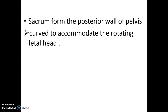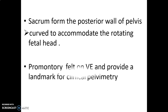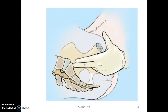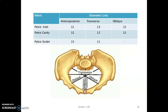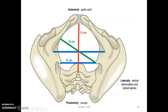The sacrum forms the posterior part of the pelvis and is curved to accommodate the rotating fetal head. The sacral promontory is a good landmark for clinical pelvimetry during vaginal examination and can be palpated. The pelvis has different obstetric diameters: the anteroposterior diameter, the transverse diameter, and oblique diameters, which vary at the pelvic inlet, pelvic cavity, and pelvic outlet.